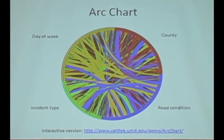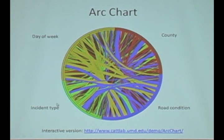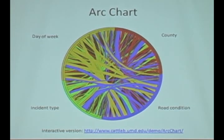I apologize for not labeling the title of the chart here. The idea is basically to take all the different properties that traffic events can take on. In yellow we have the day of the week that a traffic event was reported. In green it's the incident type — whether it was a collision, a vehicle, or a road work event. In purple we plot the condition of the roadway, whether the surface was dry, wet, or if there was snow on the ground. And in orange we plot the county in which these events were logged. And then we draw all these arcs between them.